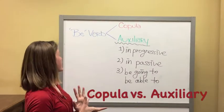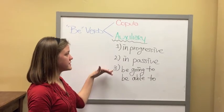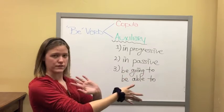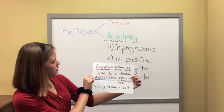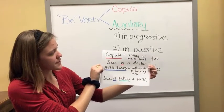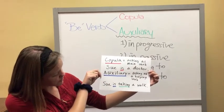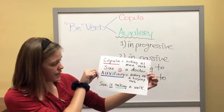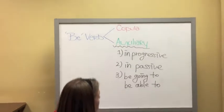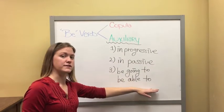Wrapping up subject verb agreement, we're going to cover the be verb and the differences between copula and auxiliary. For auxiliary, there are three cases in which the copula be is used and it becomes an auxiliary. For example, in the sentence 'Sue is a doctor,' the copula be verb is acting as the main verb — it's still the copula. For an auxiliary, however, acting as a helping verb: in 'Sue is taking a walk,' the main verb is taking, and the copula be — is — is actually helping the main verb taking. Similarly, be can help the main verb in 'able to' and 'going to,' therefore making it an auxiliary and not just a copula.